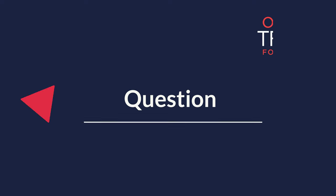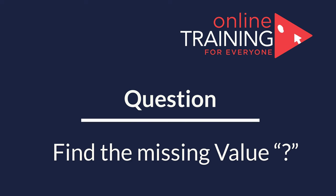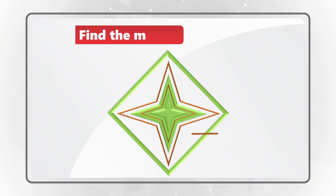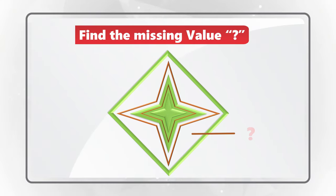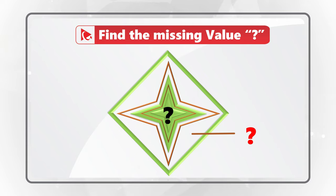Here's an amazing question where you need to find the missing values. Missing values are represented by the question mark and are located on the outside and inside the star. The star is hosted inside the diamond, and this combined figure has numbers around it.